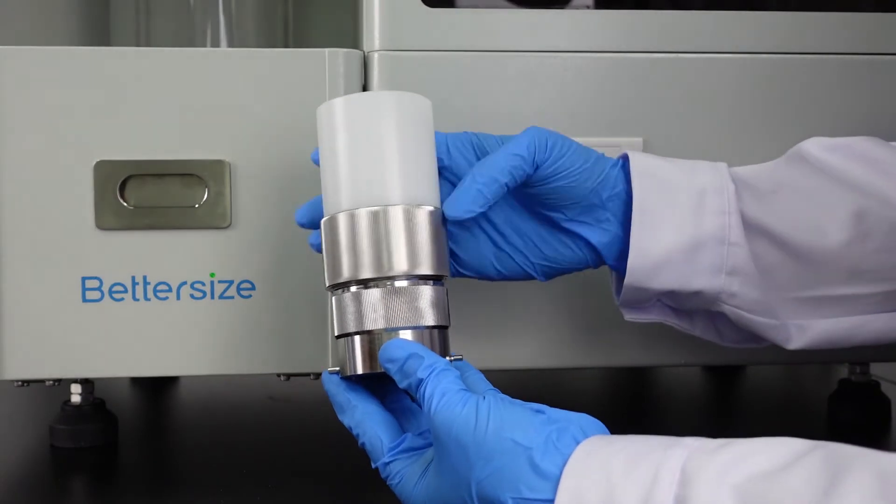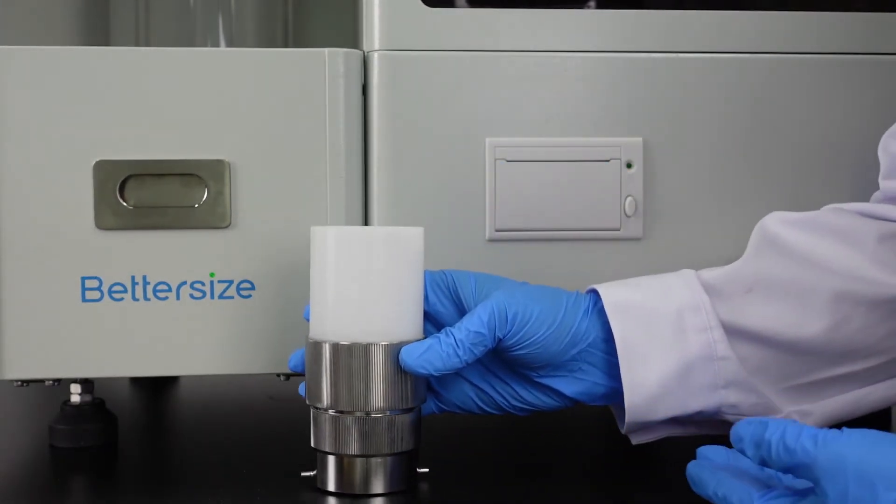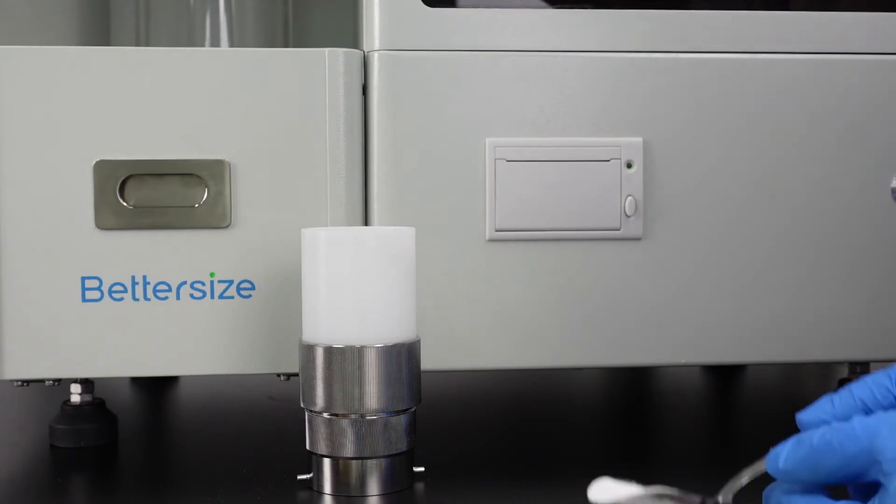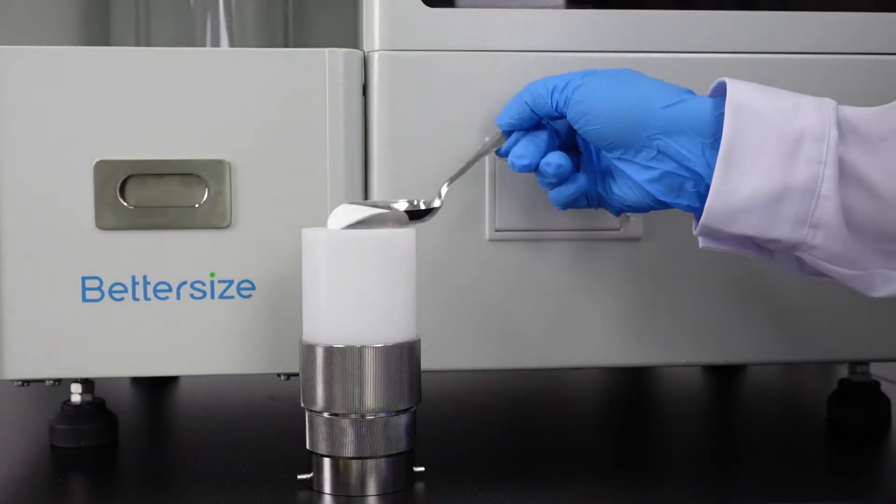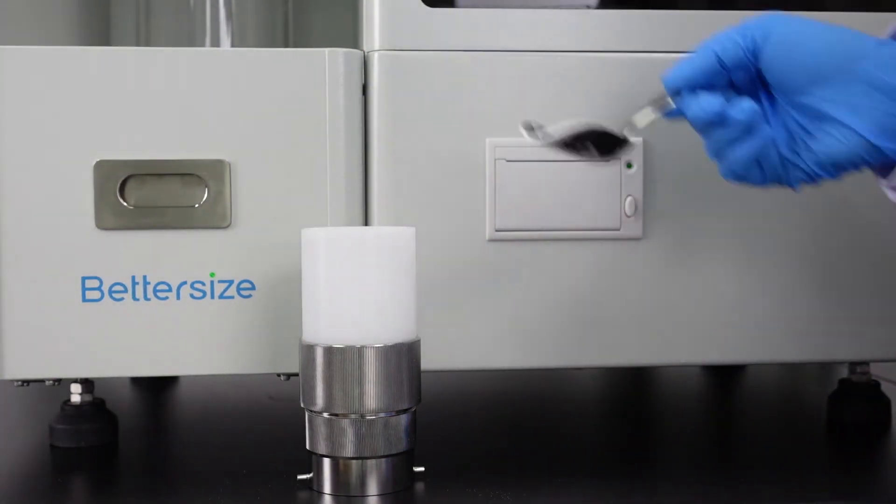Install the extension tube on a 100 ml container. Add the sample to the cylinder. The amount of sample should be more than half the height of the extension tube.